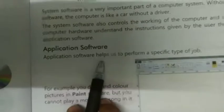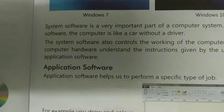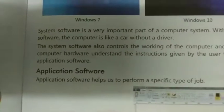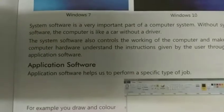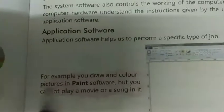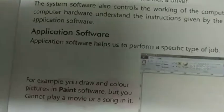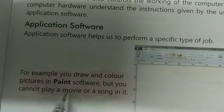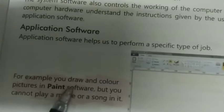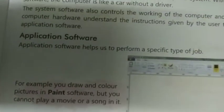Application software helps us to perform a specific type of job। Application software हमें एक विशिष्ट प्रकार का कार्य करने में मदद करता है। For example, you draw and color pictures in Paint software, but you cannot play a movie or song in it। आप Paint software में चित्र खींचते हैं और रंग देते हैं, लेकिन आप इसमें movie या गाना नहीं चला सकते।